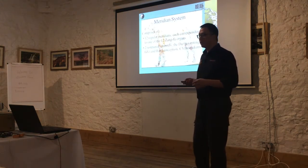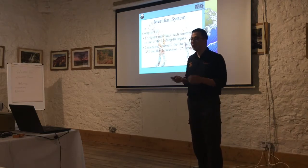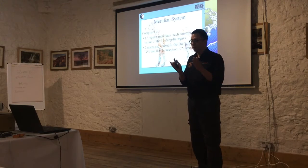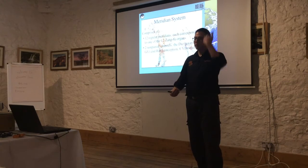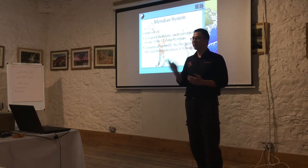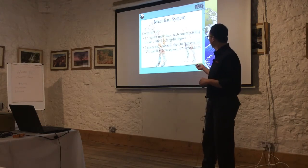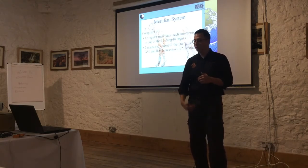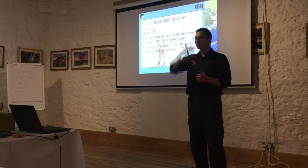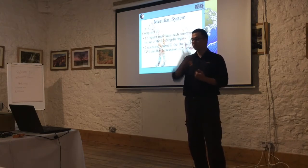The meridian system comprises 12 regular meridians corresponding to the 12 central organs. Basically, if you split your body in half, the meridian found on one side mirrors the other side — these are what we call paired meridians. Then you get two unpaired channels: the governing channel and the conception channel, because the conception channel runs right in the middle of the body, so there's no left or right.